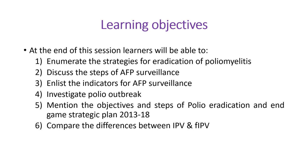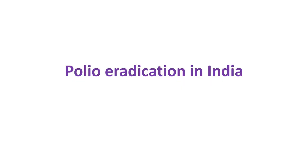At the end of this session, learners will be able to: enumerate the strategies for eradication of poliomyelitis; discuss the steps of AFP surveillance; enlist the indicators for AFP surveillance; investigate polio outbreak; mention the objectives and steps of polio eradication and end game strategic plan 2013–18; and compare the differences between IPV and fractional IPV.